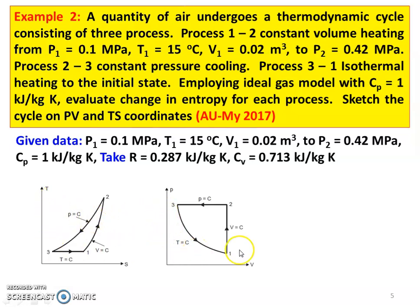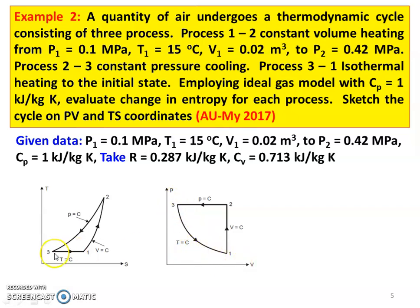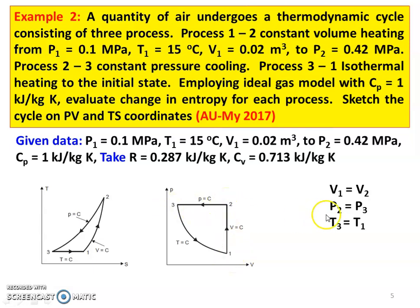Now for the PV and TS diagram: process 1 to 2 is constant volume heating — volume is constant, shown as a vertical curve in PV diagram. Process 2 to 3 is constant pressure cooling — pressure is constant, a horizontal line in PV diagram. Process 3 to 1 is isothermal heating — temperature is constant, giving a horizontal line in the temperature-entropy diagram. Process conditions: V1 equals V2 for constant volume; P2 equals P3 for constant pressure; T3 equals T1 for constant temperature.